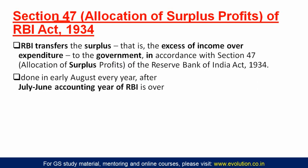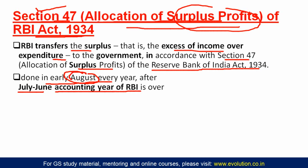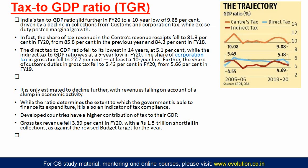Section 47 of the RBI Act 1934 — which deals with the allocation of surplus profits of the RBI — is in news because this is done in early August every year. July to June is the accounting year of the RBI. After the accounting year ends, in August the RBI transfers its surplus money — excess of income over expenditure — to the government, in accordance with Section 47 of the RBI Act 1934.